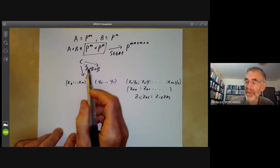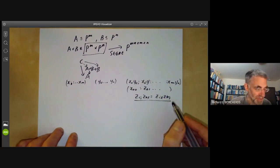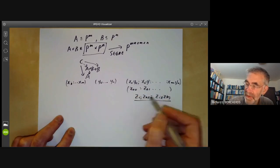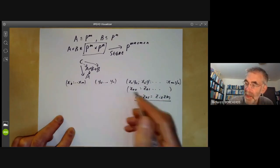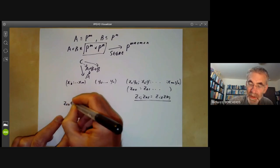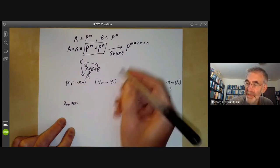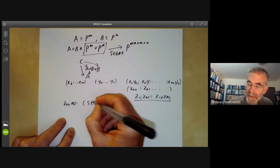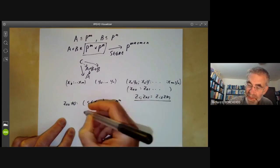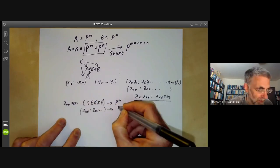So first of all, we have to check there is a morphism from this variety here defined by all these quadratic equations to projective space. So we want to define a map from this variety to projective space. So by symmetry, we may as well assume that one of the ZIs is non-zero. So suppose Z0,0 is non-zero. Then we can map the, let's call this variety Segre, the Segre variety to P to the M, just by taking Z0,0, Z1,0 and so on.